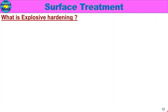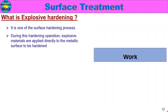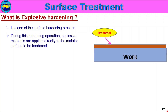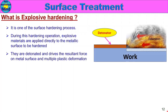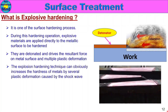Next, what is explosive hardening? It is one of the surface hardening processes. During this hardening operation, explosive materials are applied directly to the metallic surface to be hardened. The explosive materials increase hardness by driving a resultant force onto the metal surface, creating multiple plastic deformations. The explosion hardening technique increases the hardness of metals through several plastic deformations caused by the shock wave.